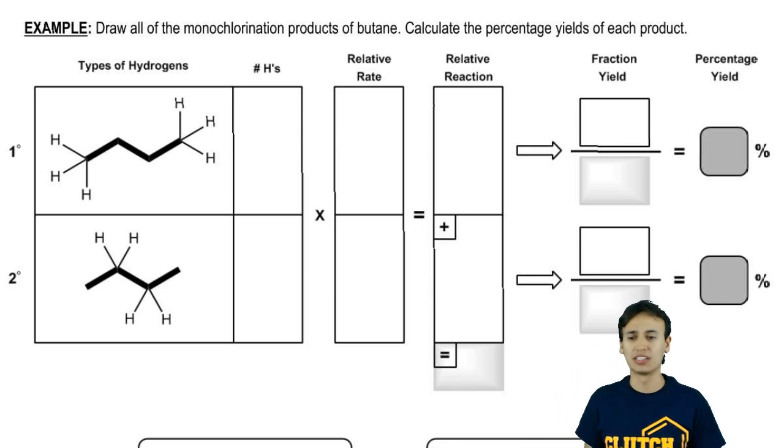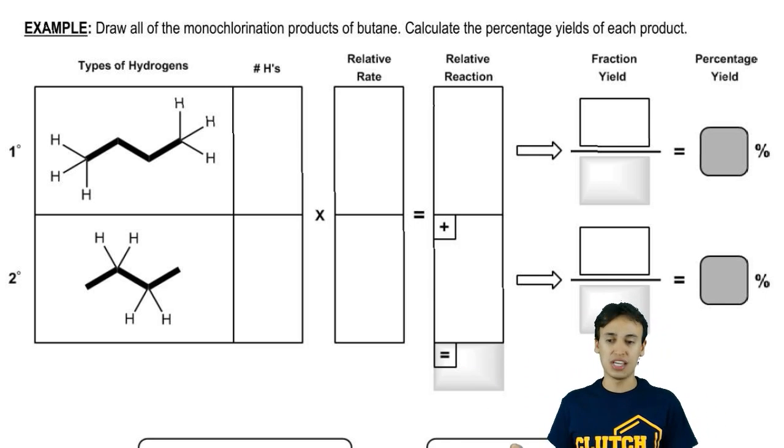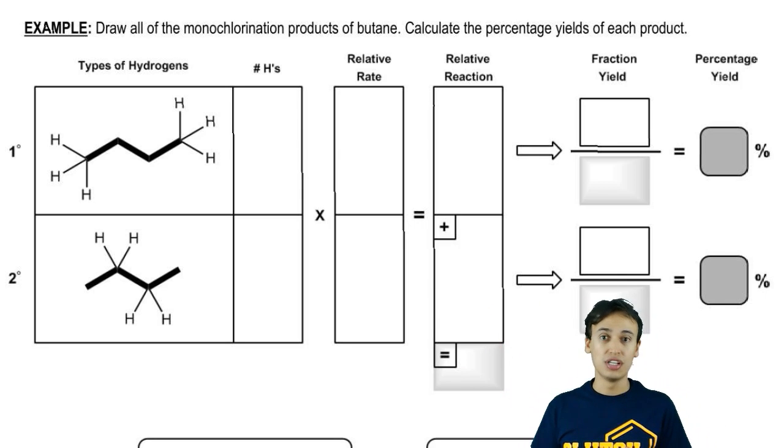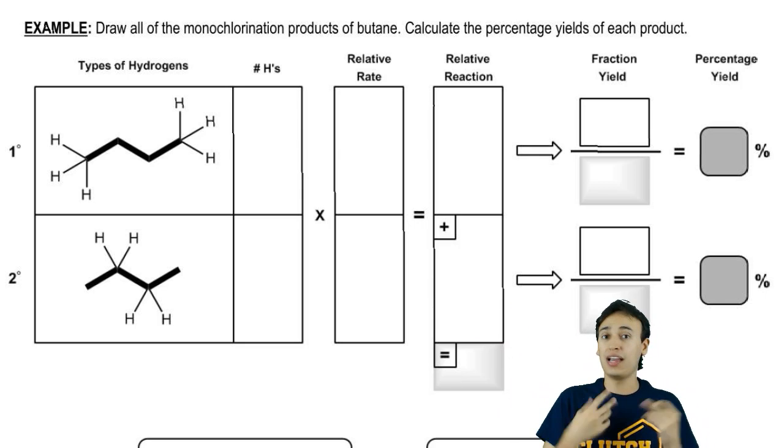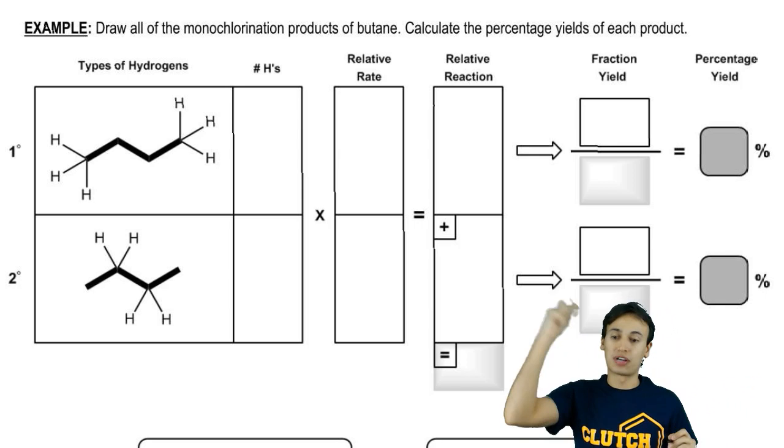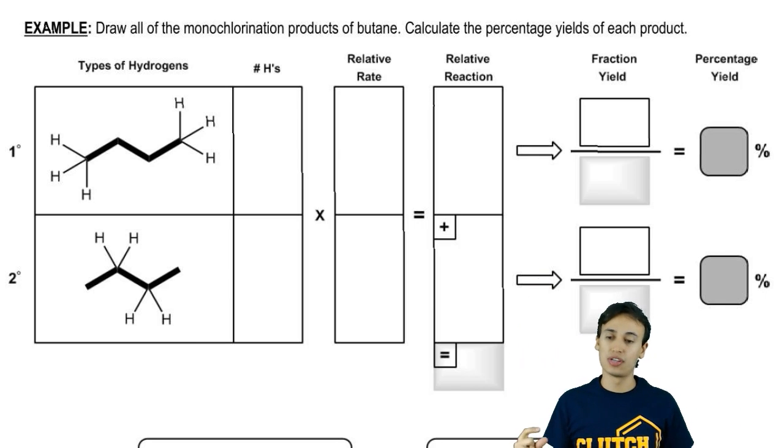We'll take this one as a worked example. First of all, butane looks like that bolded molecule there. The first thing you have to do is calculate or count up the different types of protons that you have, because remember that every type of proton has a different relative rate. As we can see, I split it up into primary protons and secondary protons.